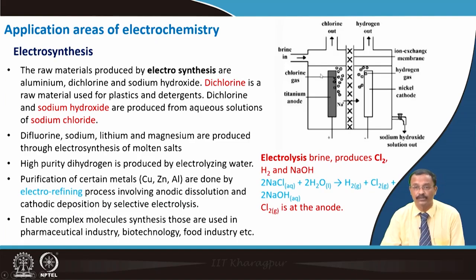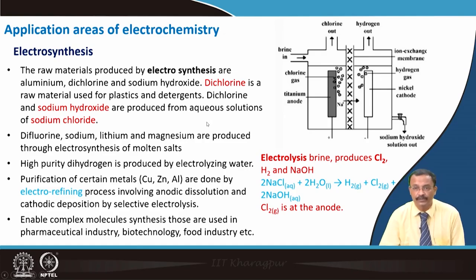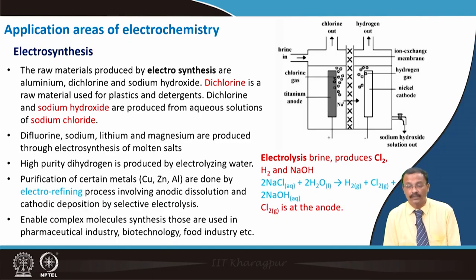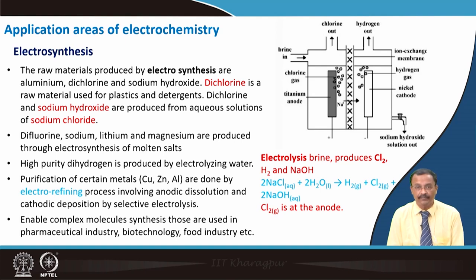This is one way to make sodium hydroxide and dichlorine apart from hydrogen, and it is one example of electrosynthesis. Other examples include difluorine, sodium, lithium, and magnesium in metal form — they are produced through electrosynthesis of molten salts. High-purity dihydrogen is produced by electrolyzing water, which also produces oxygen. In today's pandemic situation, making oxygen by electrosynthesis is also relevant.